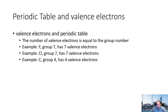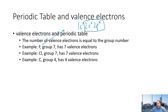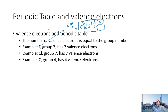Fluorine and chlorine, both group seven, each have seven valence electrons. For fluorine (1s² 2s² 2p⁵), the seven electrons on the second energy level are the valence electrons. The two electrons on the first energy level are core electrons — held very tightly to the nucleus and not involved in bonding.